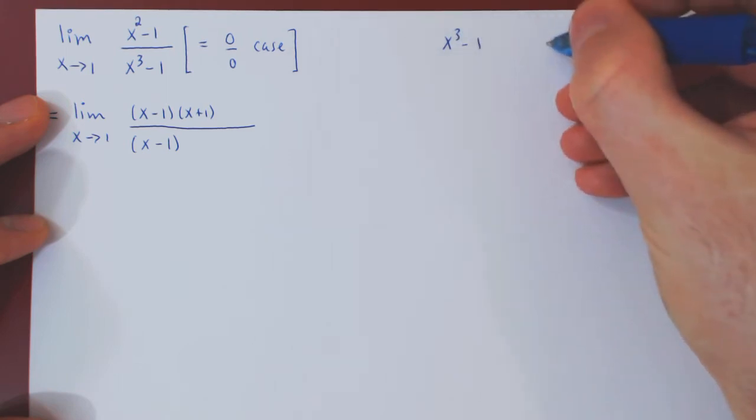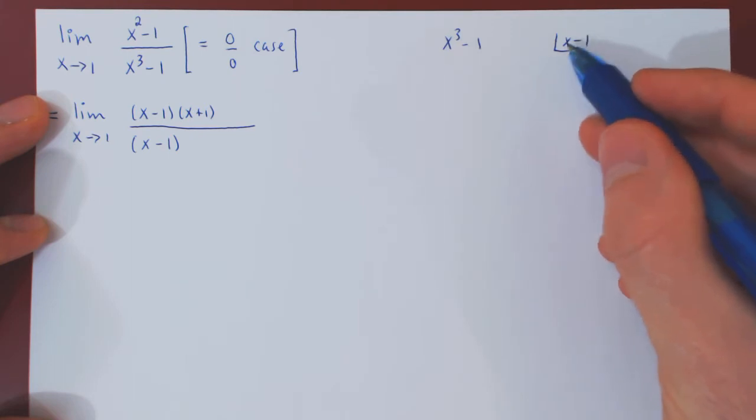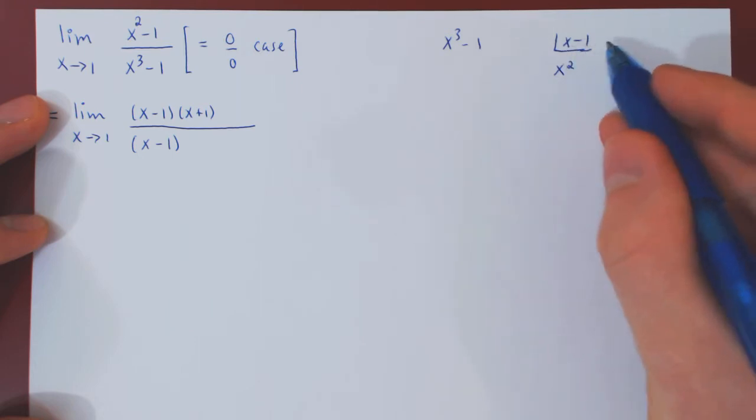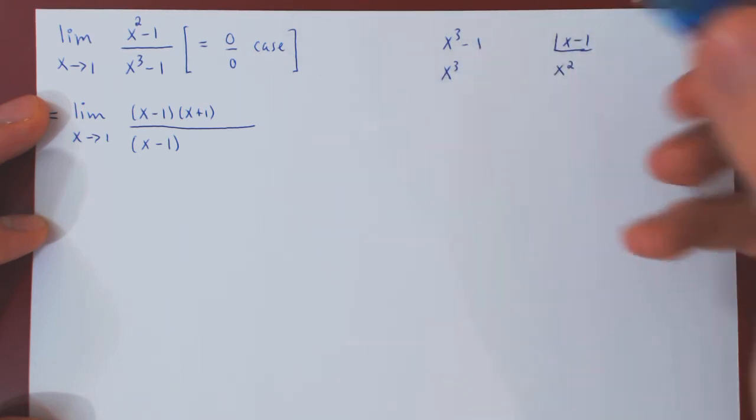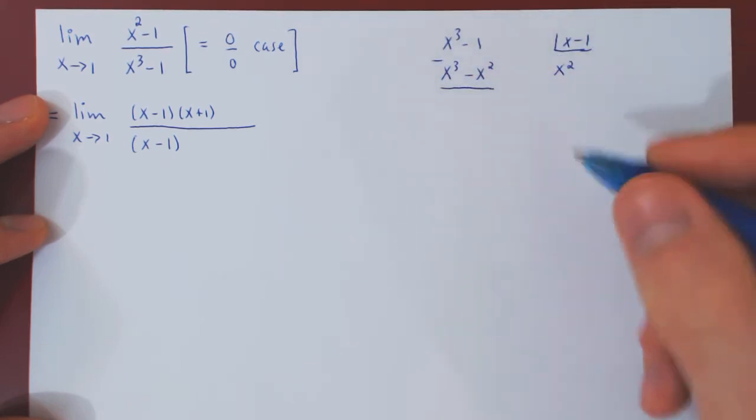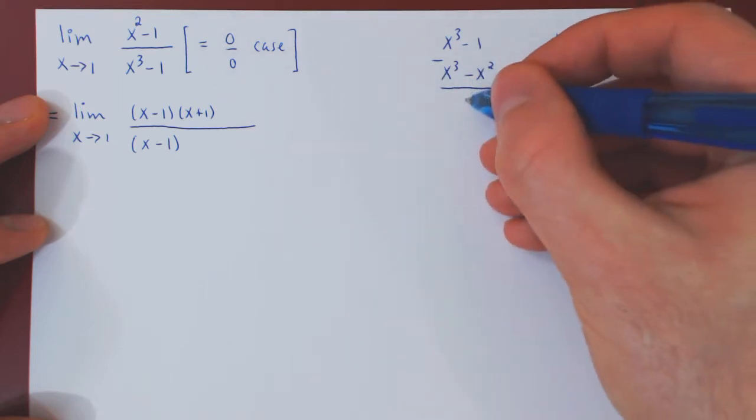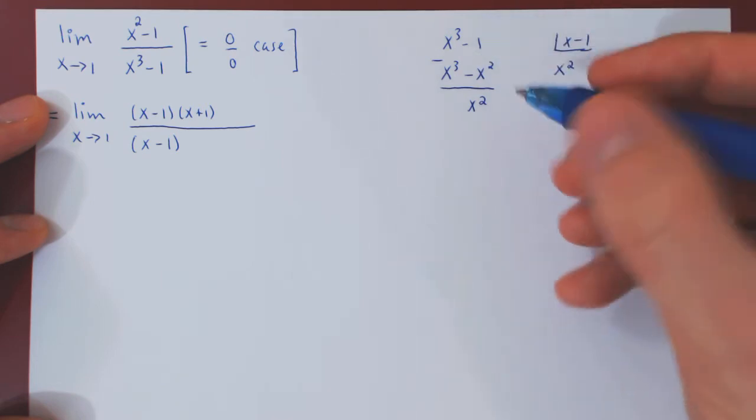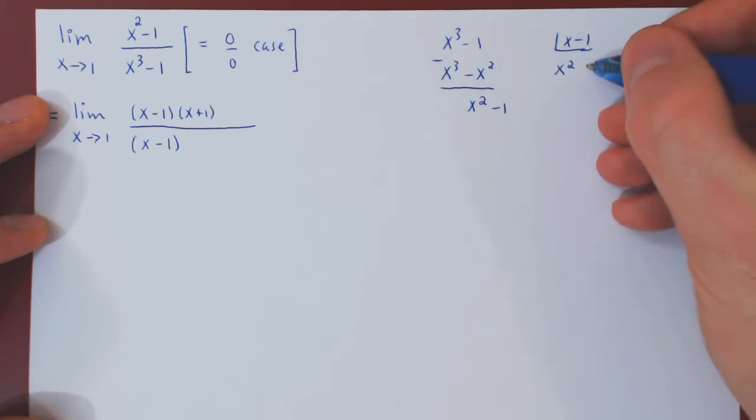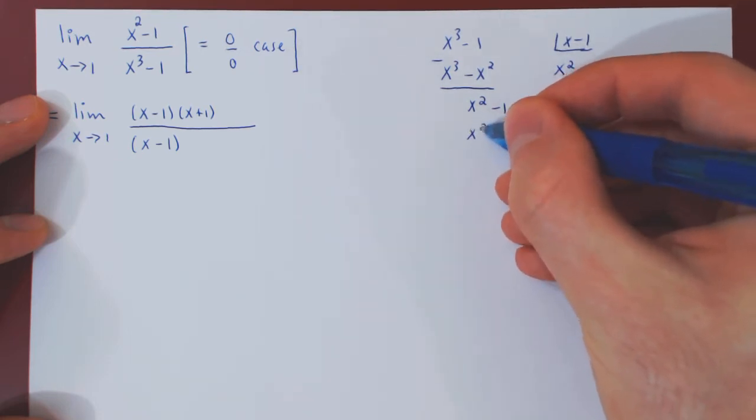So let's divide x cubed minus 1 by x minus 1. What times x is x cubed? x squared. Multiply through by x squared: x cubed minus x squared. We subtract. The x cubed both cancel. Negative negative is a positive x squared. And we have a leftover of negative 1. Let's repeat. What times x is x squared? Positive x. Multiply through by x: x squared minus x.